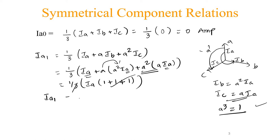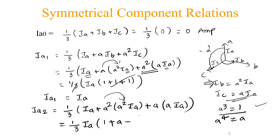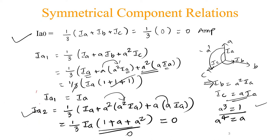Finally, the positive sequence current Ia1 equals the phase current Ia. Now for the negative sequence current: Ia2 equals one-third times (Ia plus A²·Ib plus A·Ic). Substituting Ib equals A²·Ia and Ic equals A·Ia, and simplifying — taking Ia common gives (1 plus A⁴ plus A²·A) = (1 plus A plus A²), which equals zero. Therefore Ia2 equals zero. So Ia0 equals zero, Ia2 equals zero, and only the positive sequence current Ia1 equals the phase current Ia.